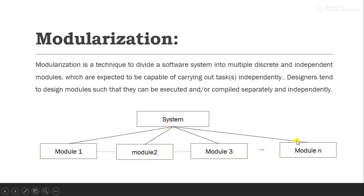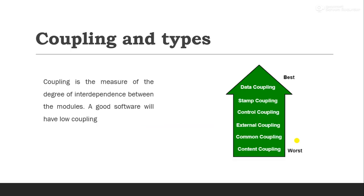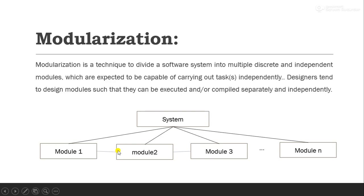Modularization is a technique of dividing the entire software system into a number of independent modules. Coupling is the measure of the degree of interdependence between modules. A good software system will have low coupling. The degree of interdependence between two modules is known as coupling — it defines how these two modules are interdependent with each other.